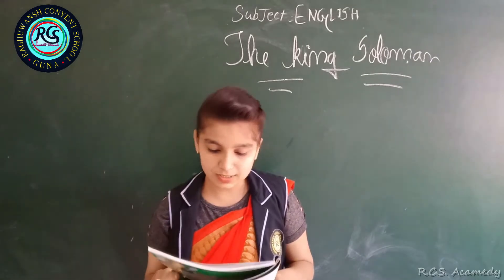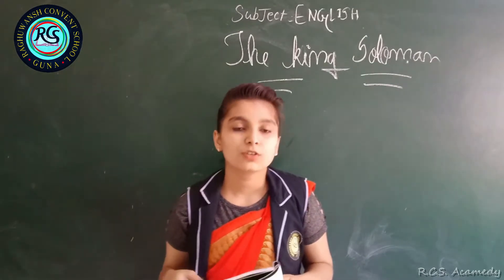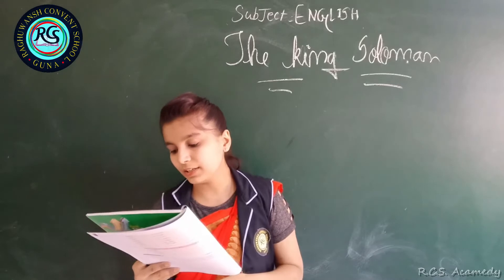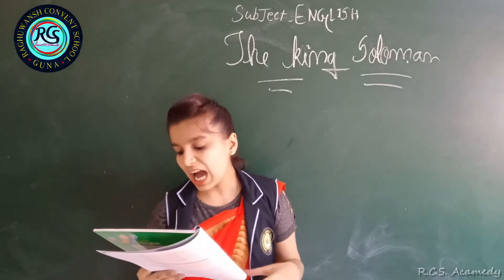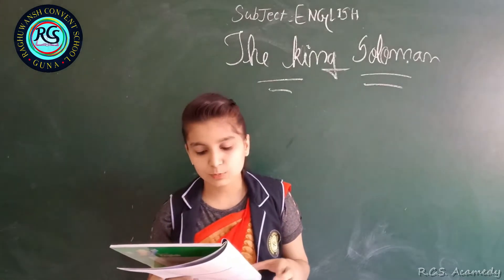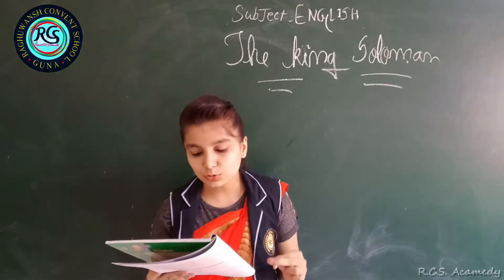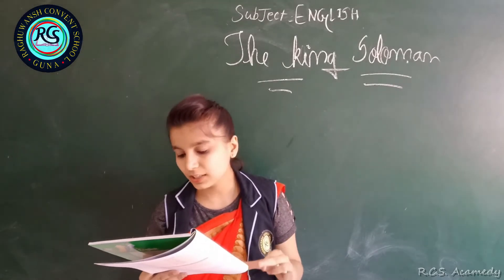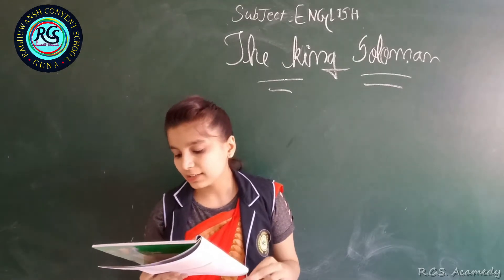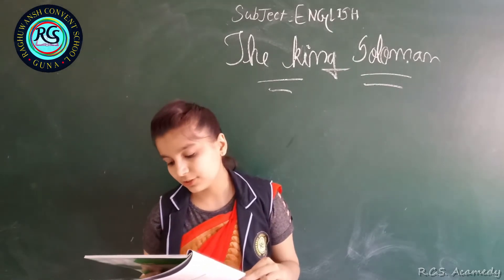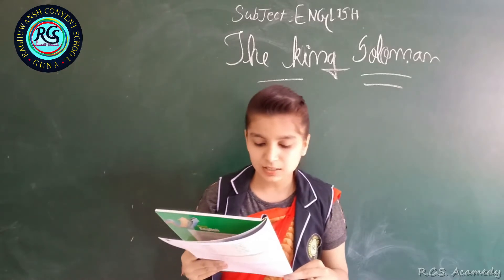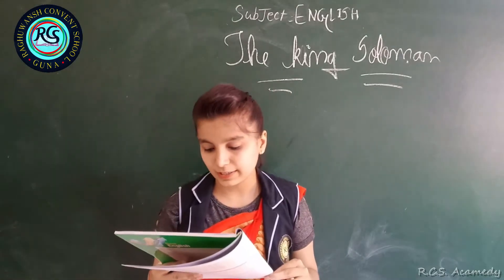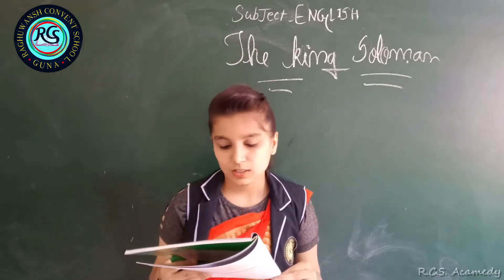She wanted to test his wisdom. So one day she asked her maidservants to bring two garlands of flowers — one natural and one artificial. Her maidservants brought both types of garlands and gave them to the queen.